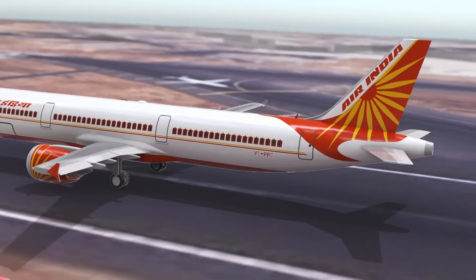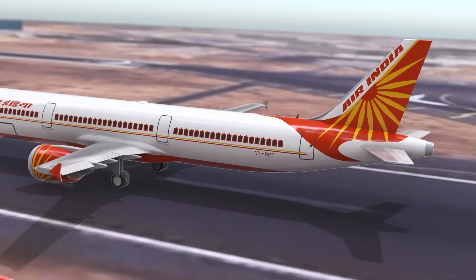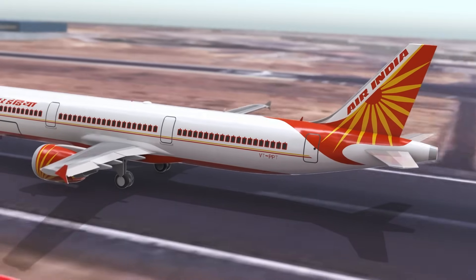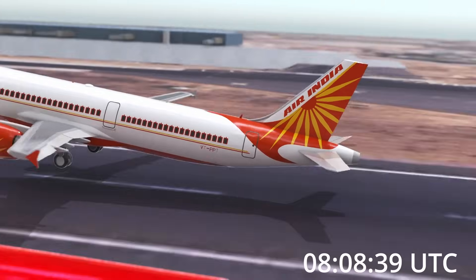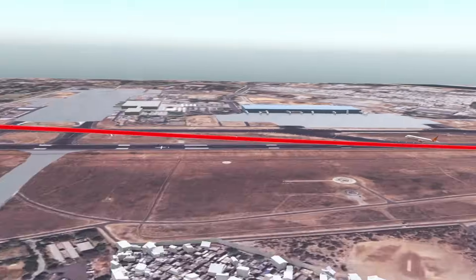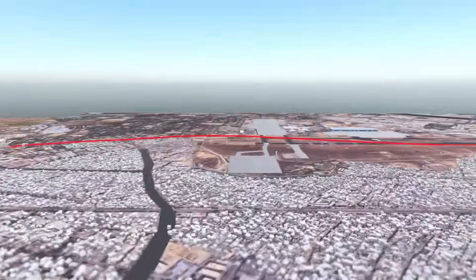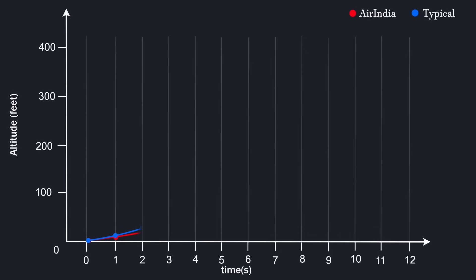Exactly what time did the engines lose power? The takeoff happened at 8:00:39. If you compare the trajectory of this airplane to the trajectory of a Boeing 787-8 under typical conditions, the deviation is obvious right from the beginning. This means both engines lost power within one second of takeoff.